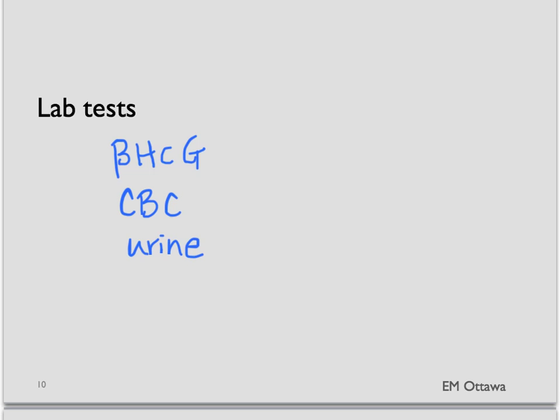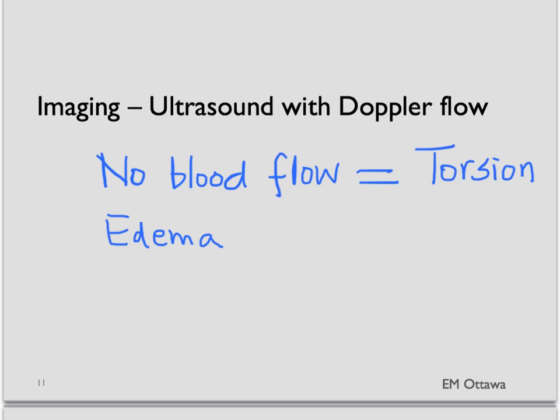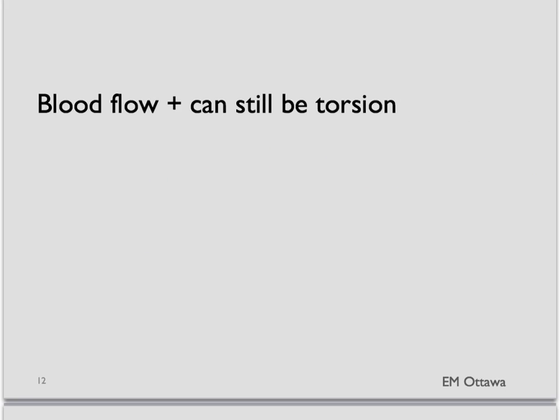The mainstay of diagnosis lies in radiology. Ultrasound with Doppler flow measurement is the test for ovarian torsion. The lack of blood flow establishes the diagnosis. They may also sometimes see the ovarian mass, cyst, or edema on the ultrasound as well.